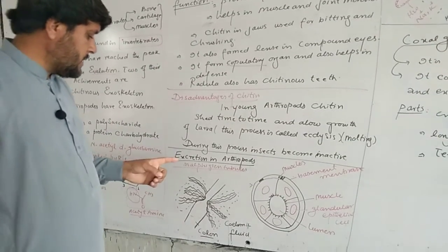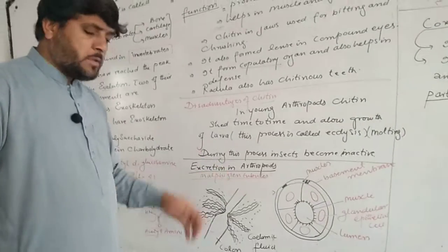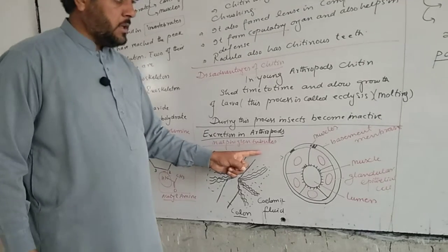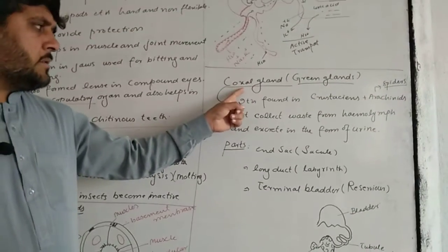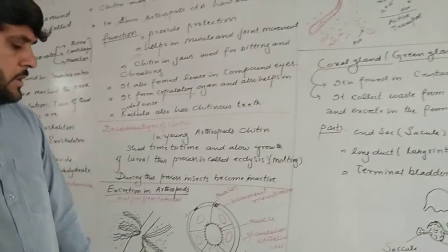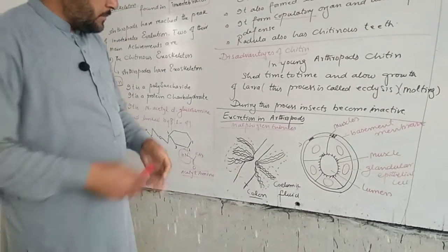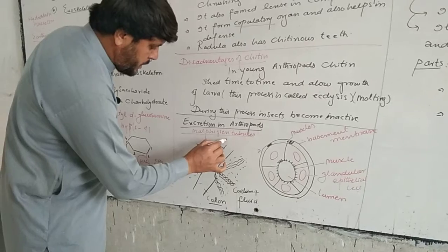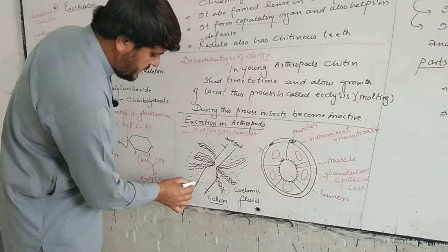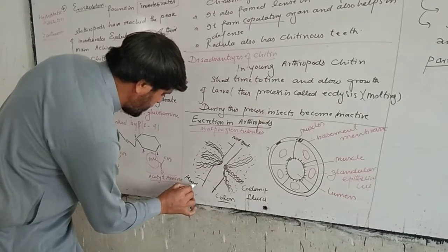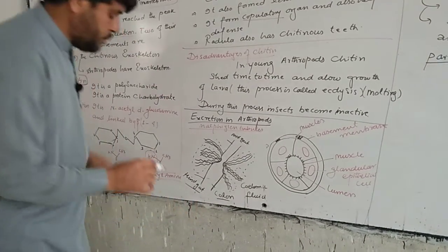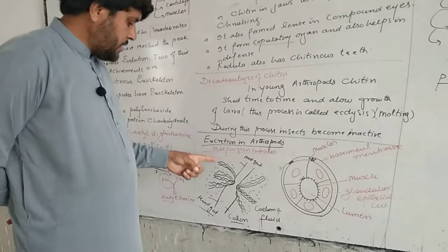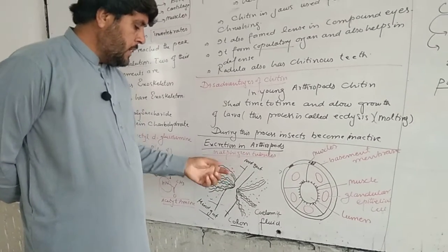Now let's discuss excretion in arthropods. This is a special character of arthropods. Excretion occurs through different mechanisms - mainly through Malpighian tubules, or sometimes through coaxial gland or green gland. In arthropods, between the midgut and hindgut - the intestine system.